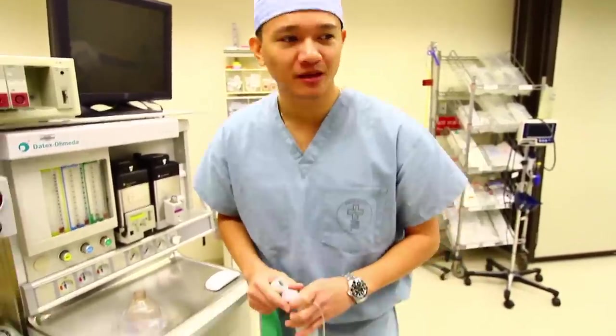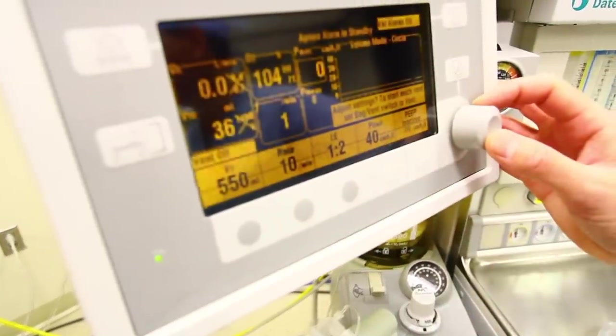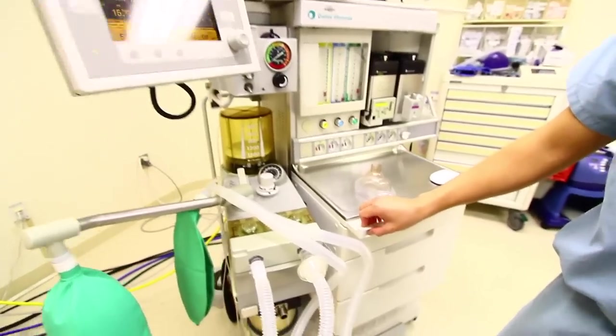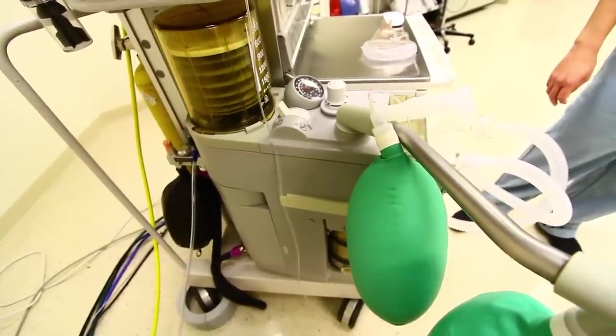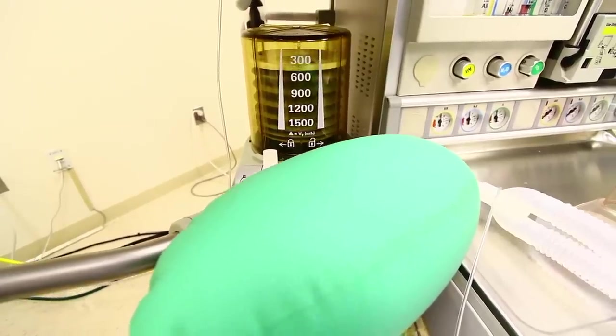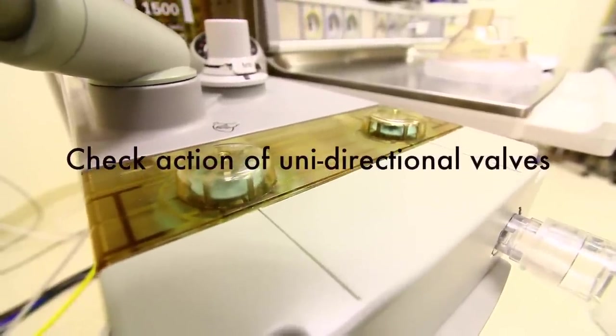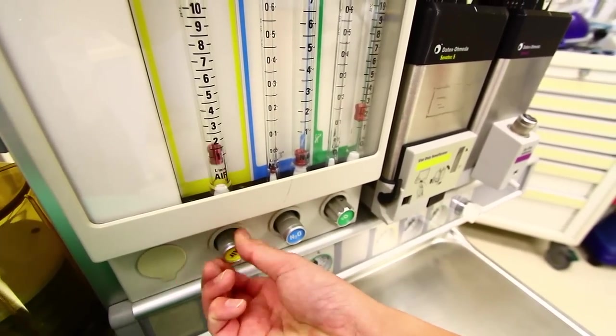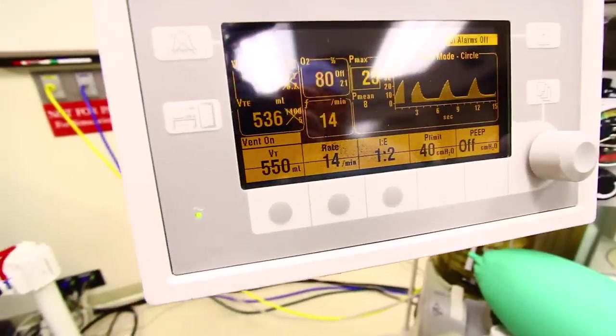Now we want to check the ventilation system and unidirectional valves. Place a second breathing bag on the Y piece. Then set appropriate ventilator parameters and switch it to automatic ventilation. Fill the bellows and breathing bag with the oxygen flush valve. Set your fresh gas flows to about 5 liters per minute and ensure that proper tidal volumes are being delivered.